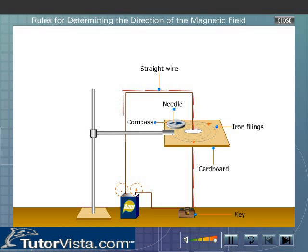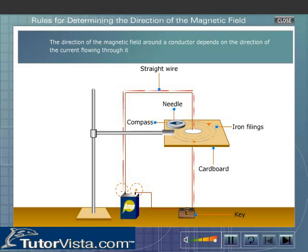Now observe the direction of the compass needle when the current is reversed. The deflection of the needle is reversed in these cases. This shows that the direction of the magnetic field around a conductor depends on the direction of the current flowing through it.